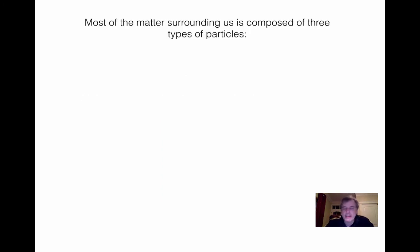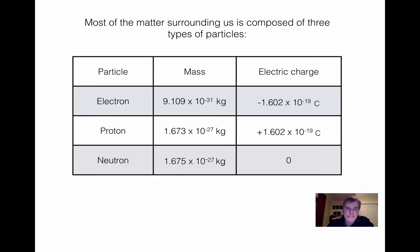Now as you know, matter that surrounds us is mostly made of three types of particles. Here they are: the electron, the proton, and the neutron. Just a couple of comments. So here you have their masses and the electric charges. By the way, you don't have to learn anything here by heart. In the test you'll be given all those constants. You notice the electron is much, much lighter than the protons and neutrons by a factor of about 2,000. Also, it's interesting to notice that protons and neutrons have almost the same mass, but a neutron is just a tiny bit heavier than the proton.